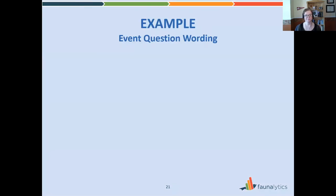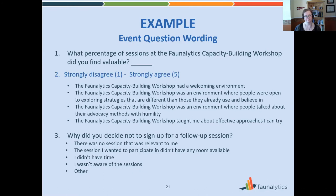Let's look at some questions for measuring opinions about an event. We have three general types: the first asks about the value of sessions at a hypothetical Phonalytics workshop; the second is a series of agreement-to-disagreement questions about the workshop environment; and the third is about people who decided not to sign up for a follow-up session — seen only by people who indicated they had decided not to follow up. Feel free to pause and think about improvements before continuing.